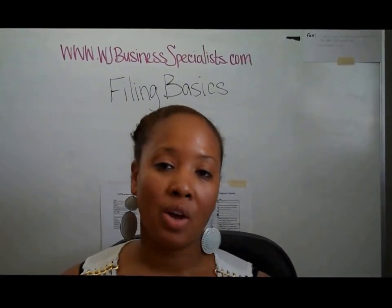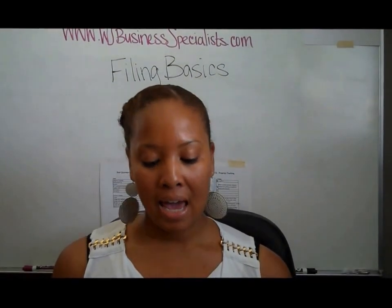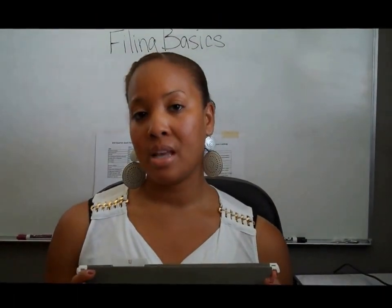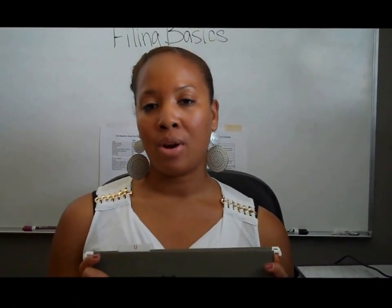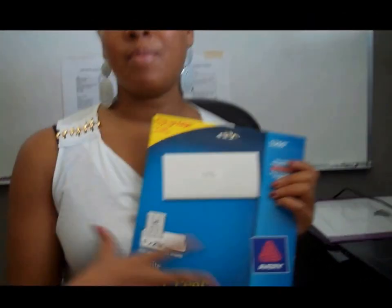To start, we're going to go over the supplies that you need. We're going to start with your hanging file folders. It's always important to get hanging file folders — they come in a variety of different colors and patterns, and you can really have a lot of fun with this and create a system that looks appealing to you. The next thing that we need are your Manila file folders. This is what you're going to put all of your documents in. And then, of course, you need your labels so that you can go ahead and create your naming system.